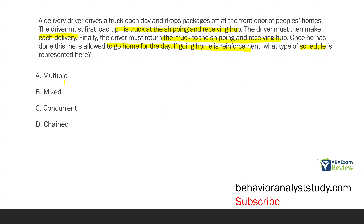Multiple and mixed schedules are when we have one or more basic schedules that are randomly rotating or going back and forth — the schedules are not occurring at the same time. Concurrent schedules has to do with choice, where we have two different schedules for two different behaviors. Here, the schedule is chained because each of the simple schedules leads into the next simple schedule, making a compound schedule where each schedule must be completed in a certain order to earn that reinforcement.